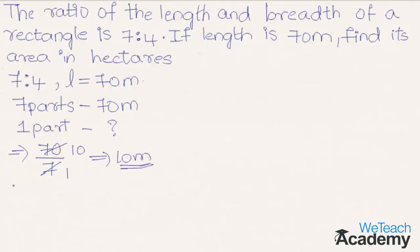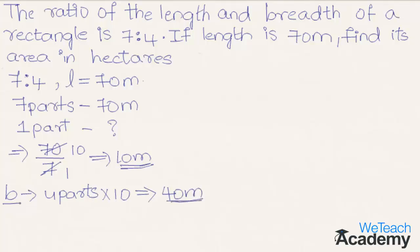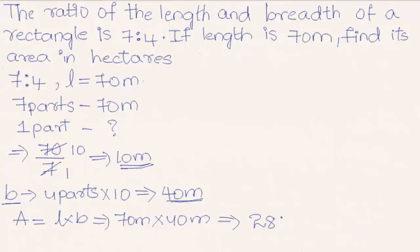Since breadth is 4 parts according to the ratio, we multiply 4 into 10 meters to get 40 meters as the value of breadth. We know that area of a rectangle is equal to L into B, so substituting the values: 70 meters into 40 meters gives us an area of 2800 square meters.